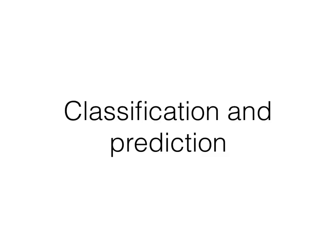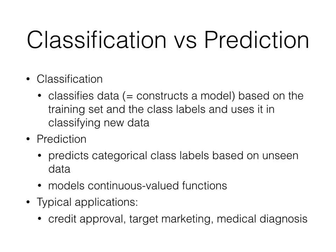First off, classification and prediction. With classification, we're trying to classify data or build a model based on a training set and the class labels, and then use it to classify new data. Classification is about building the model. The next stage is prediction, where we're trying to predict these categorical class labels based on some unseen or new data set. Typical applications include credit approval, targeting advertising campaigns, or medical diagnosis.